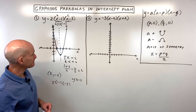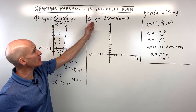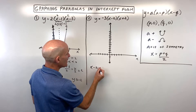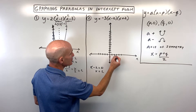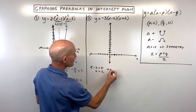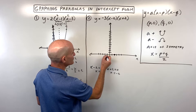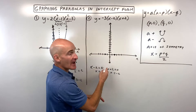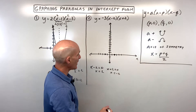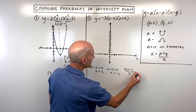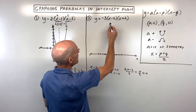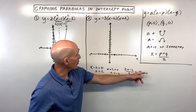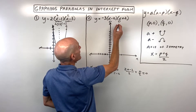Now for example two. Setting the factors equal to zero: x minus two equals zero gives x equals two, and x plus two equals zero gives x equals negative two. Those are our two x-intercepts. Averaging them — adding and dividing by two — gives zero over two, which is zero. So the axis of symmetry is on the y-axis, and we plug zero back in for x to get the vertex.